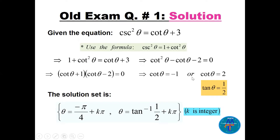Factoring gives: (cotangent θ + 1)(cotangent θ − 2) = 0. So cotangent θ = −1, or cotangent θ = 2, which means tan θ = 1/2. For cotangent θ = −1: θ = −π/4 + kπ, since the period for tan and cotangent is π. For tan θ = 1/2, this is not a special angle, so θ = tan⁻¹(1/2) + kπ, where k is an integer. These are the solutions.